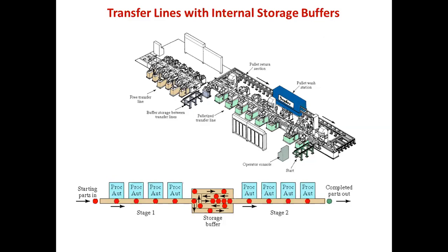Blocking means that a station is prevented from performing its work cycle because it cannot pass the part it just completed to the neighboring downstream station. When a breakdown occurs, stations upstream from the affected station become blocked because the broken-down station cannot accept the next part. By adding one or more storage buffers between workstations, the production line can be designed to operate more efficiently.